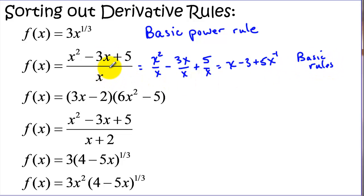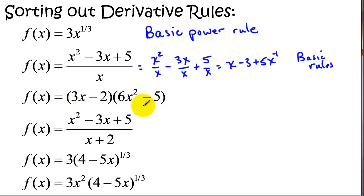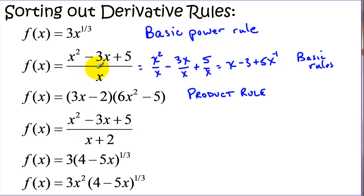Now this is also a quotient and we could do it using the quotient rule, but for this particular problem that's much more difficult than rewriting and using our basic rules. If we look at this problem we would have two choices — we could foil this out and use our basic rules, but we also have an expression with an x times another expression with x's, and that would be an indicator for our product rule. This problem is similar except we have a binomial on the bottom, an expression instead of a monomial, and on this we can't divide out so we would be using the quotient rule.